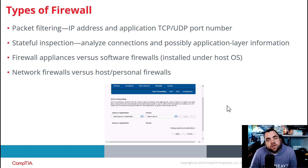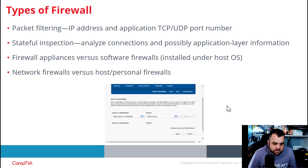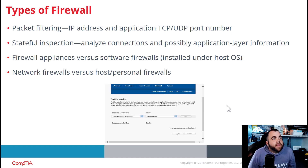Other ways to stay secure include firewalls. There are a couple of types. First, packet filtering looks at the IP address, application, and port number — if you're getting traffic to port 80 and you're not running a web server, you block it. Then there's stateful inspection, which goes beyond just the port and looks at the application layer to get more information about what the application is doing to determine if it's good or bad for users.